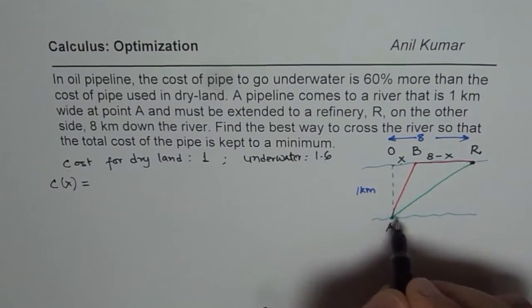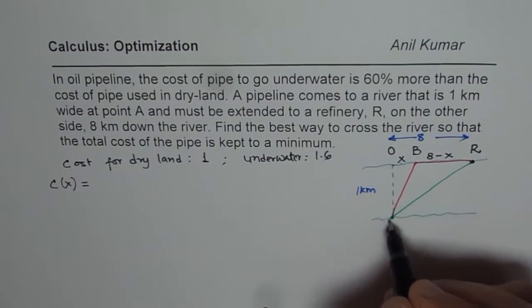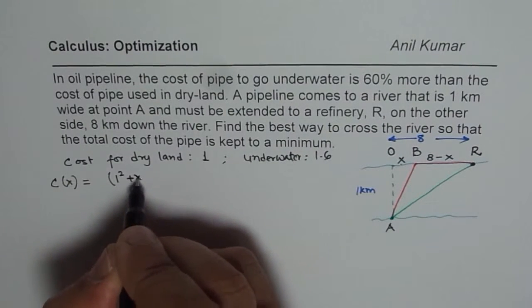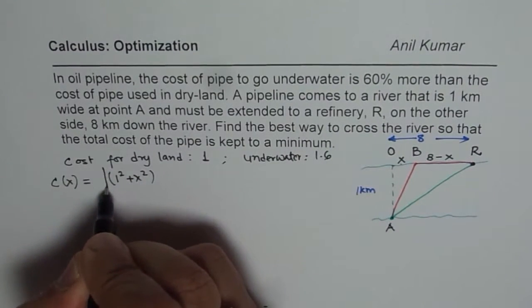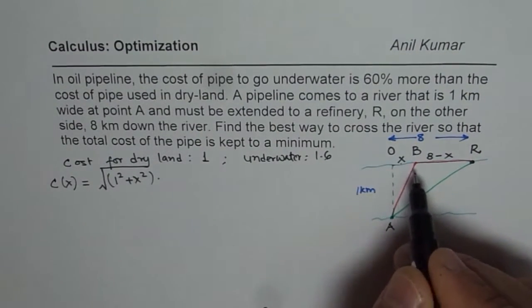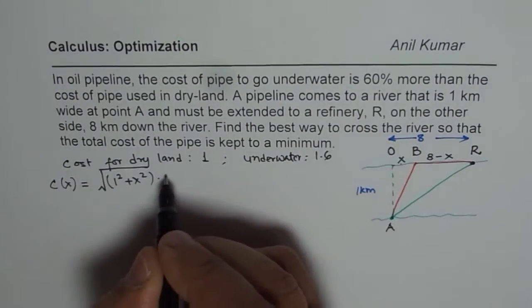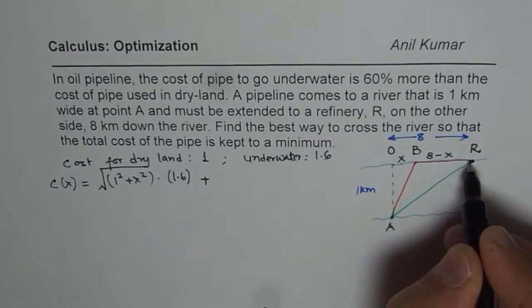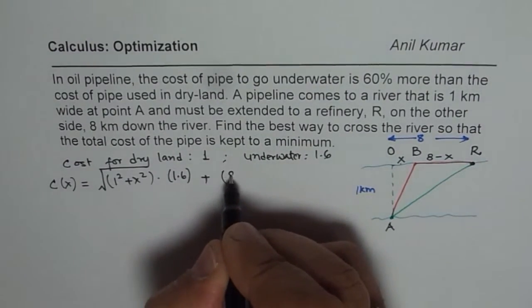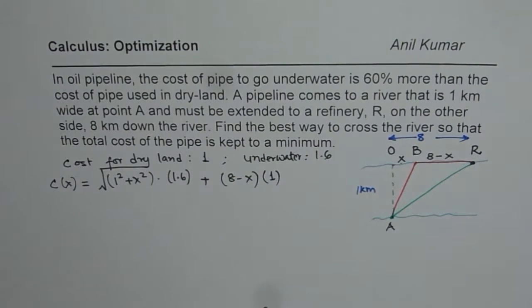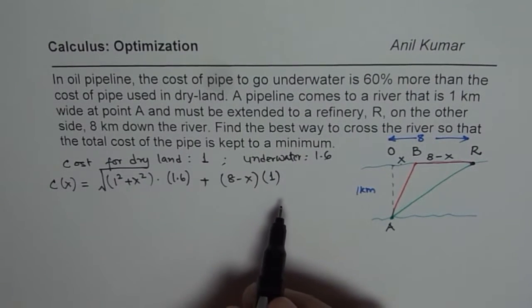Cost of laying as a function of x is the distance AB, which is √(1 + x²), times 1.6, plus the distance BR which is (8 - x) times 1. So that becomes the total cost of laying.